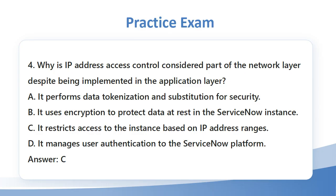Question 4: Why is IP address access control considered part of the network layer despite being implemented in the application layer? a. It performs data tokenization and substitution for security. b. It uses encryption to protect data at rest in the ServiceNow instance. c. It restricts access to the instance based on IP address ranges. d. It manages user authentication to the ServiceNow platform. Answer: C.